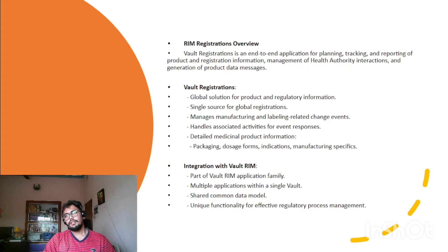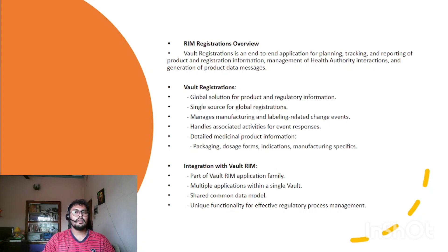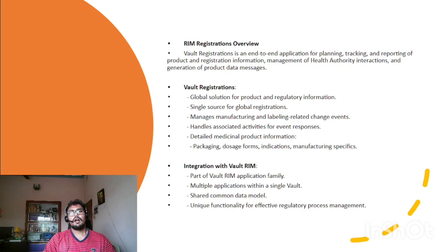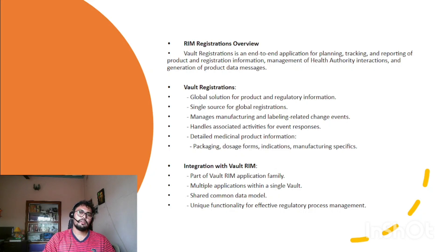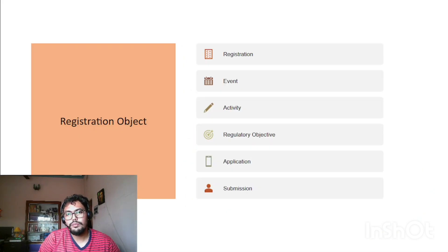To summarize a few key points of Vault registration: first, it is a global solution for product and regulatory information; it is a single source for global registration; it manages manufacturing and labeling-related change events; and it handles activities associated with event response and detailed medical product information — such as packaging, dosage form, indication, and manufacturing specifics. It integrates with Vault RIM as part of the Vault RIM family, sharing a common data model and unique functionality for effective regulatory process management.